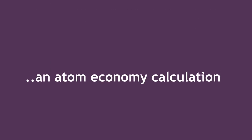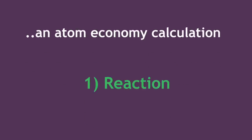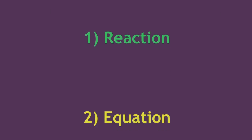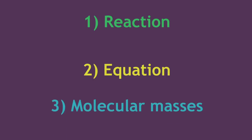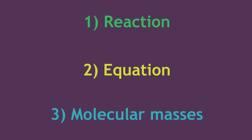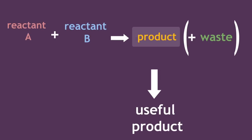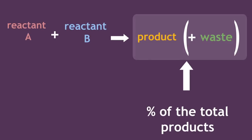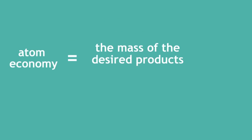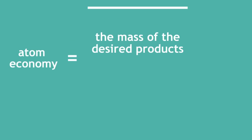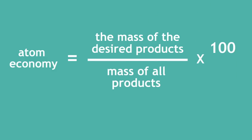To carry out an atom economy calculation, we must look at our reaction and the equation and use the molecular masses. Remember, we want to calculate the amount of useful product as a percentage of the total products. So the equation for this will be: atom economy equals the mass of the desired products divided by the mass of all the products multiplied by 100.